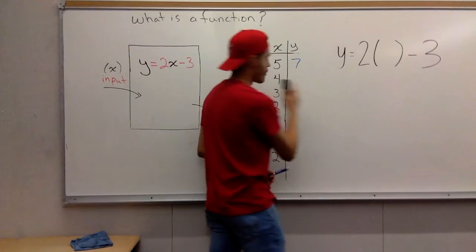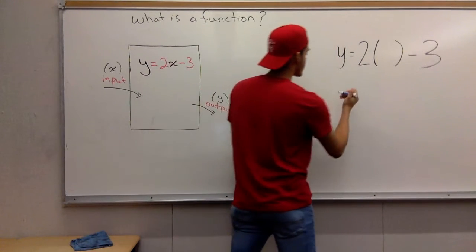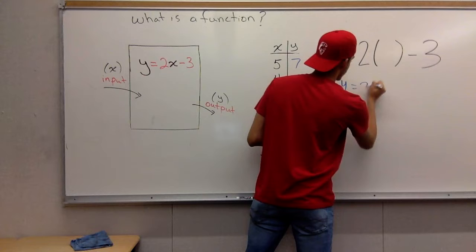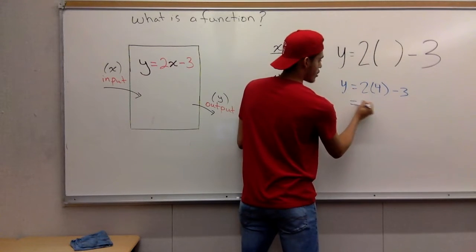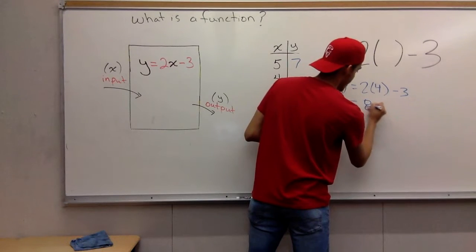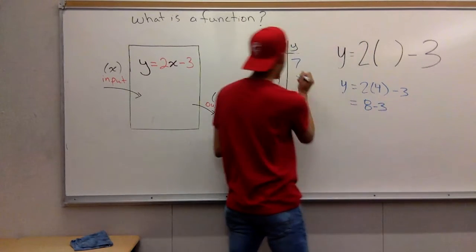All right, we'll do the next one. We have 4 right here. We put the 4 in the empty space. We have Y equals 2 times 4 minus 3. 2 times 4, that is 8. 8 minus 3, you get 5.